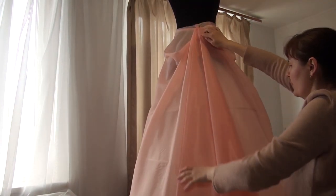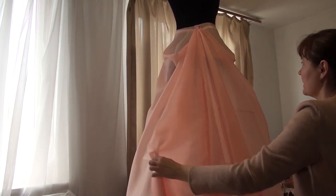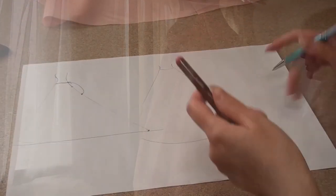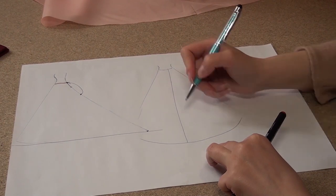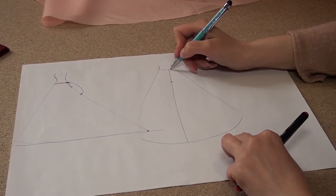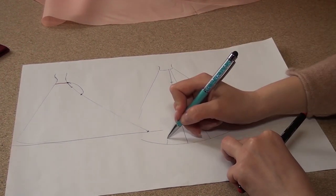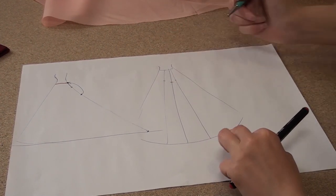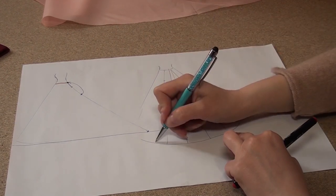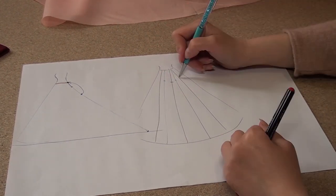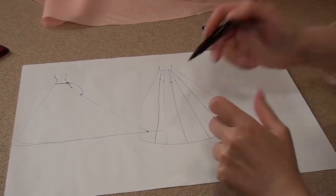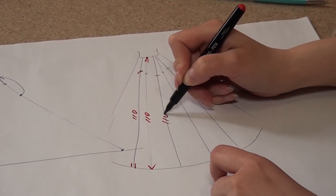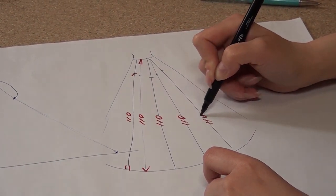But sometimes it's not enough. Sometimes for a half circle skirt you need three loops and three buttons. For a circle skirt, five loops and five buttons, or even seven loops and seven buttons. It depends on the length of the train. More length means more loops and buttons you need.